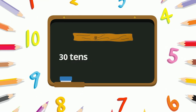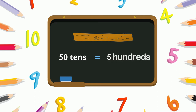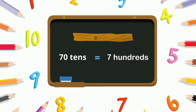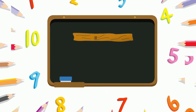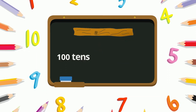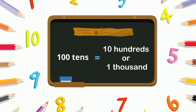Thirty tens mean three hundreds. Forty tens mean four hundreds. Fifty tens mean five hundreds. Sixty tens mean six hundreds. Seventy tens mean seven hundreds. Eighty tens mean eight hundreds. Ninety tens mean nine hundreds. And a hundred tens mean ten hundreds, or one thousand.